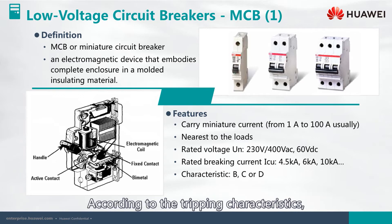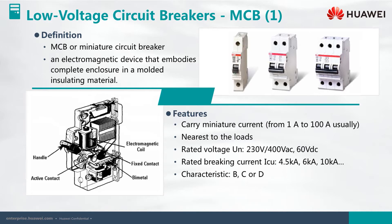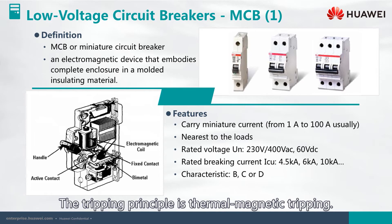According to the tripping characteristics, MCBs can be divided into types B, C, D, Z, and K. The tripping principle is thermal magnetic tripping.